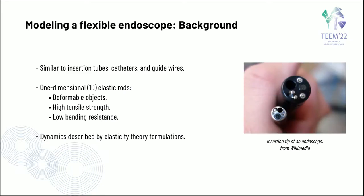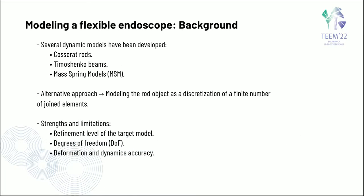The flexible endoscope shares features with slender objects like insertion tubes or catheters, commonly known as 1D-elastic rods — objects with high tensile strength and low bending resistance. To describe the dynamics of these objects, a common approach is to use elasticity theory formulations. From this approach, several dynamic models have been developed, like Cosserat rods or Timoshenko beams. An alternative approach is the discretization of the rods as a finite number of unit elements. Both approaches have strengths and limitations regarding degrees of freedom and dynamic accuracy of the resultant model.